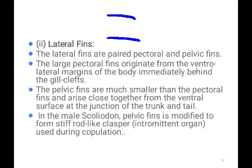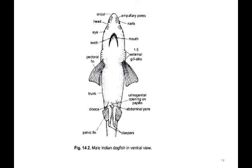The clasper is the reproductive organ — it is an intermittent organ used during copulation. Since fertilization in the shark is internal, the gametes must unite inside the body of the female. The clasper helps to transfer sperm inside the body of the female. You can see in the diagram the pectoral fins and the pelvic fins.